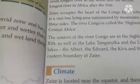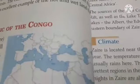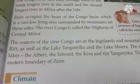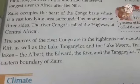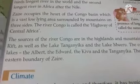Hello students, good morning. In the previous video lecture we discussed about the land and location of Zaire, that is the Democratic Republic of Congo. Today we will discuss about Zaire again. Zaire occupies the heart of the Congo basin, which is a vast low-lying area surrounded by mountains on three sides.